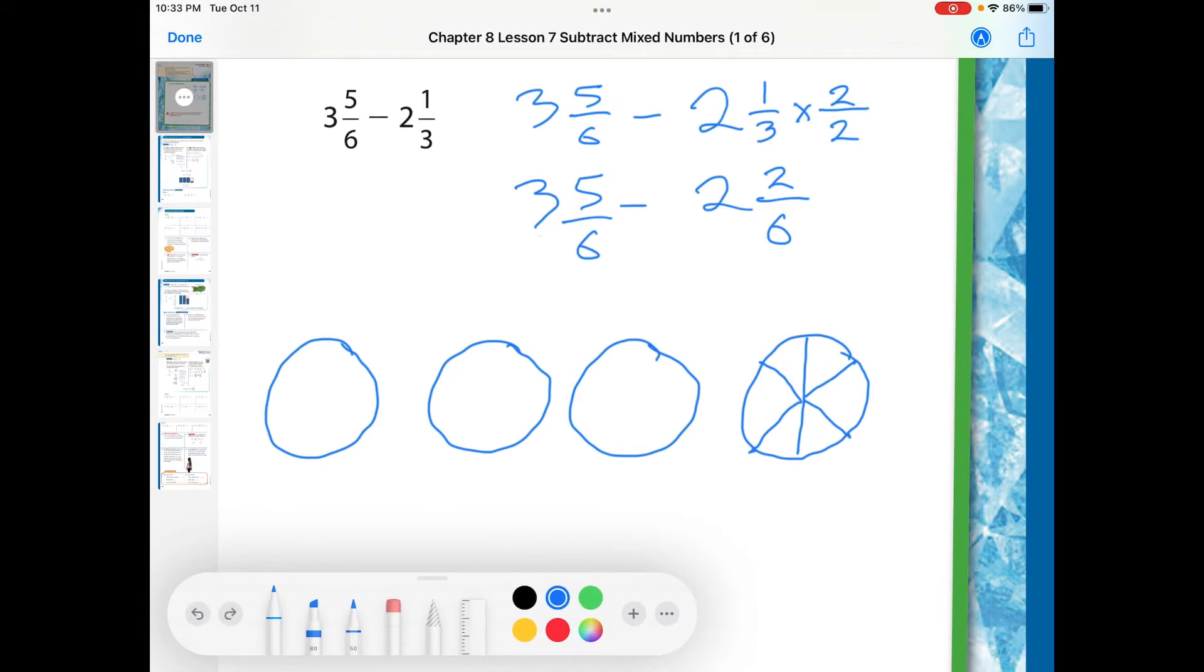Now, I'm going to go ahead and color in 5 sixths of these. So I'm going to go ahead and color in this right here. I'm going to color this guy right here. This is my third one. This is my fourth one. And this is my fifth one.